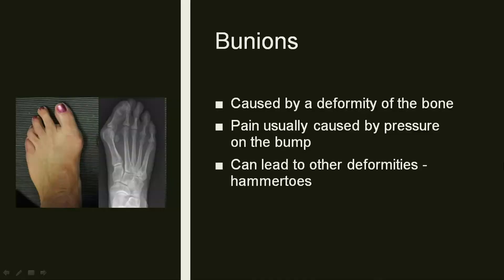Bunions — this is something else I see a lot in my clinic being a foot and ankle specialist. A bunion is not just a bump on the bone. It's actually a deformity where the great toe turns in, causing a prominence of the metatarsal. On an x-ray, the left side just looks like a bump, but on the right side, the toe has actually turned to the side, and that's what causes the prominence.